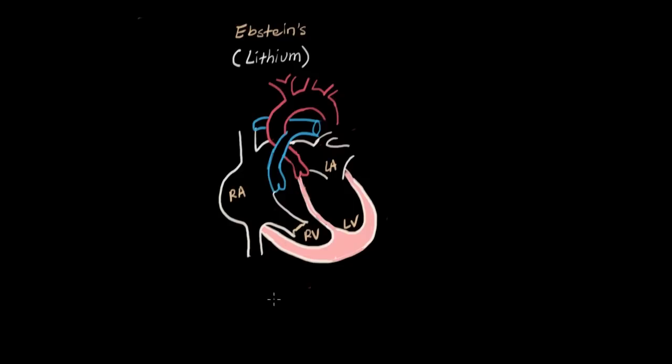There's a word associated with Epstein's, we call it the atrialization of the right ventricle. Let me see if I can spell that. Atrialization. It basically just means because the tricuspid valve that separates the two drops down, then this whole area above that used to be the right ventricle or supposed to be now is the atrium. So the atrium is bigger, the ventricle is smaller. This makes the right ventricle pretty wimpy. It's small and weak.